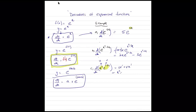Using product rule: if this is u and this is v, then uv prime plus vu prime. The differentiation of e to the power of minus 3x is e to the power of negative 3x times negative 3, plus v — which is e to the power of negative 3x — times u prime, which is 2x. Simplifying: minus 3x squared e to the power of negative 3x plus 2x e to the power of negative 3x. Taking e to the power of negative 3x common gives e to the negative 3x times the bracket minus 3x squared plus 2x.